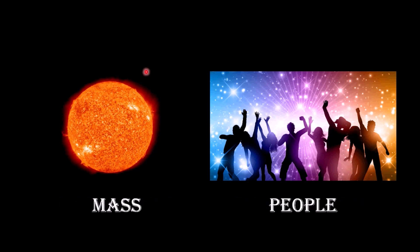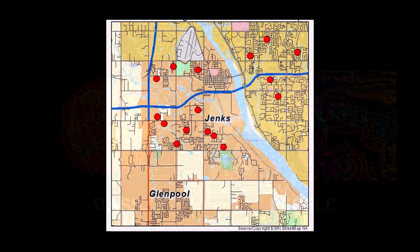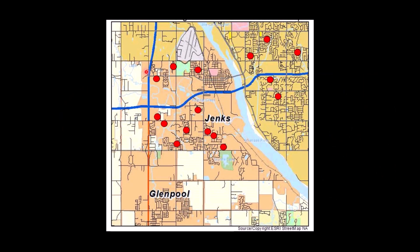So, let's start with the party. And let's start with talking about people and the mass of the star. So, let's pretend I'm going to throw a party and I want to make sure I get all the invitations out. And so, I take a map of Jenks and I put where everybody I'm going to invite, I put a little dot on the map. So, you can see, these are everybody I'm going to invite.